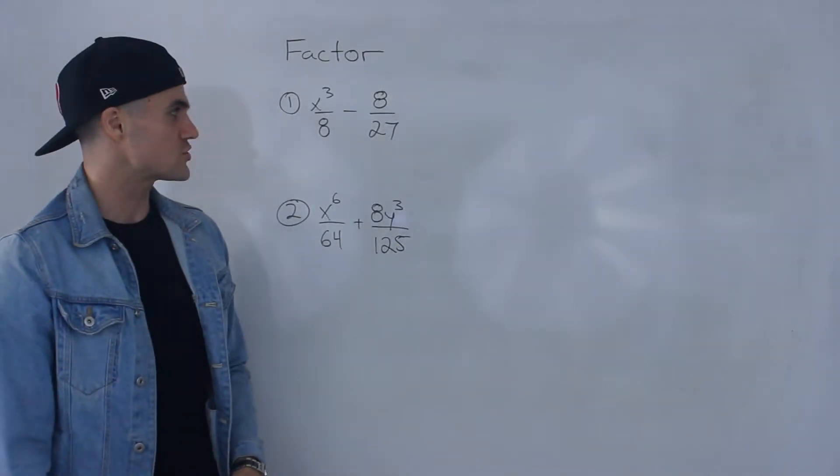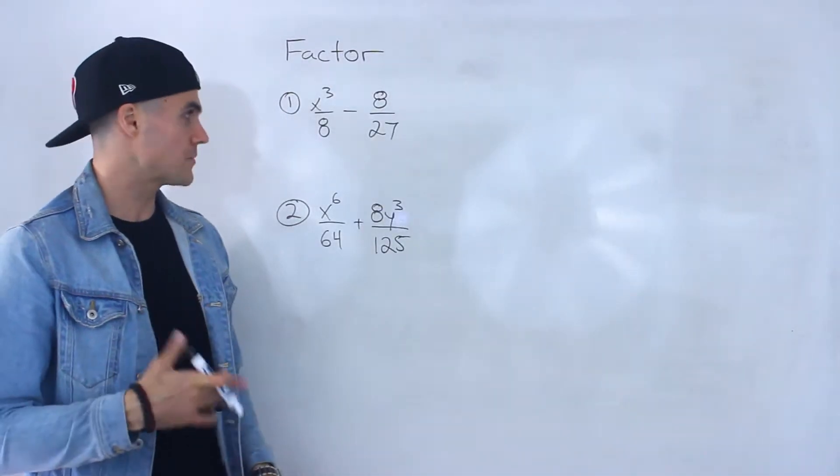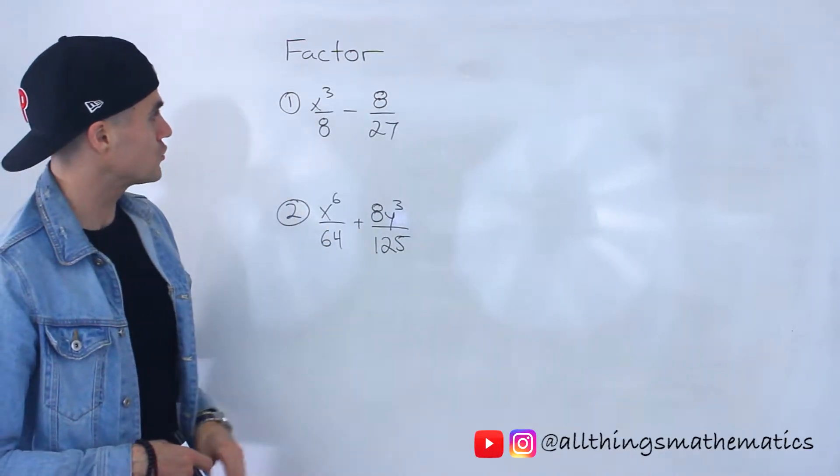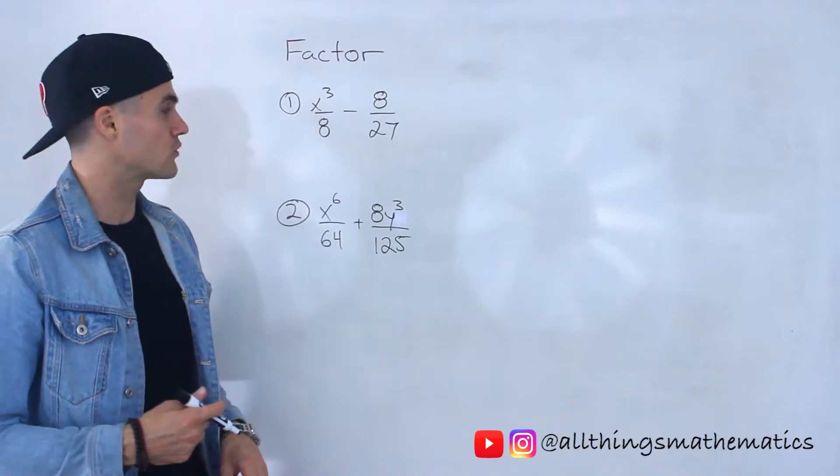Welcome back, everyone. Patrick here, moving on to another example dealing with sum and difference of cubes here. So we've got to factor these two expressions. So starting with this one, we've got x cubed over 8 minus 8 over 27.